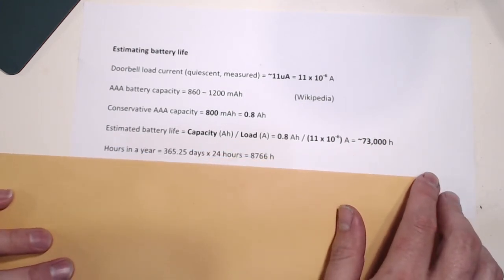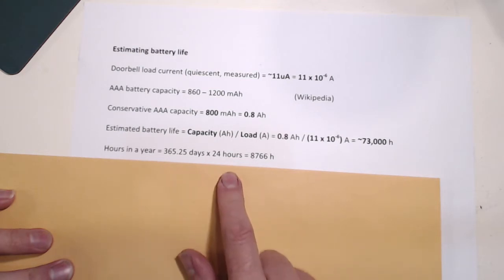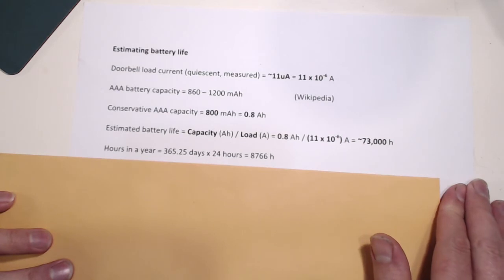Now, how many hours in a year? Well, let's say there are about 365.25 days in a year, because we've got the odd leap year. Times 24 hours, it's about 8,766 hours per year.